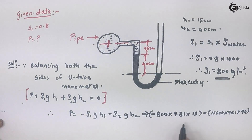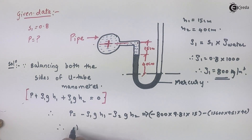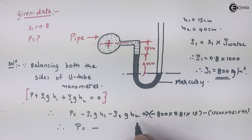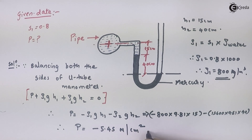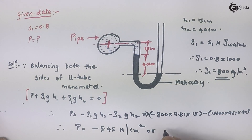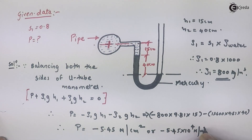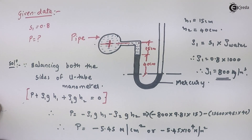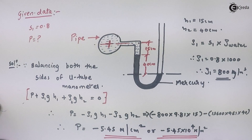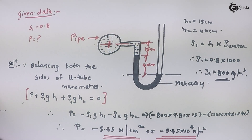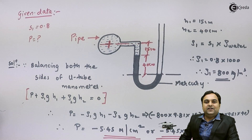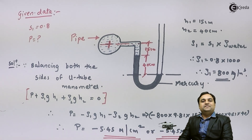After putting all the values, the answer comes out negative: −5.45 N/cm². Converting to N/m², we multiply by 10⁴, giving −5.45 × 10⁴ N/m². The negative sign confirms that the pressure inside the pipeline is vacuum pressure. This is how we calculate vacuum pressure using a simple U-tube manometer.